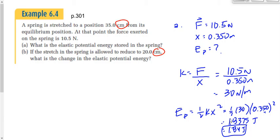Question B: if the stretch in the spring is allowed to reduce to 20 centimeters, what's the change in elastic potential energy? We don't have an equation that directly solves for the change in potential energy, so we'll find the potential energy at 20 centimeters and then subtract the initial value.